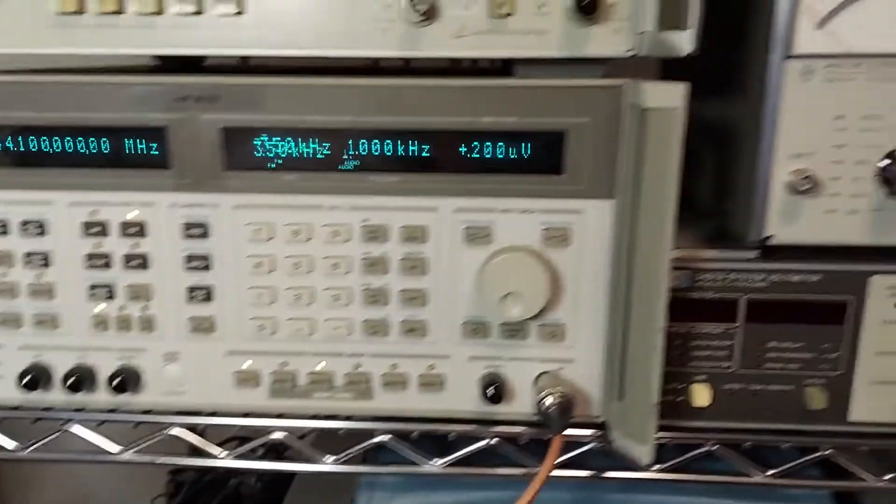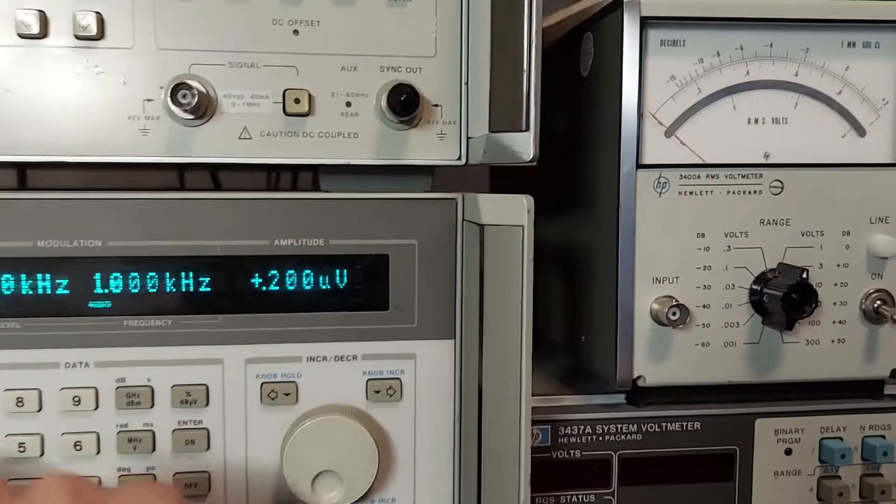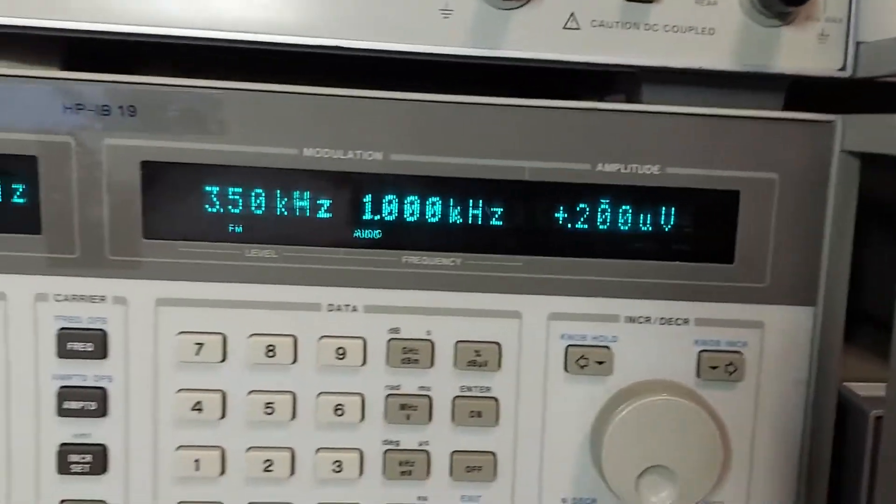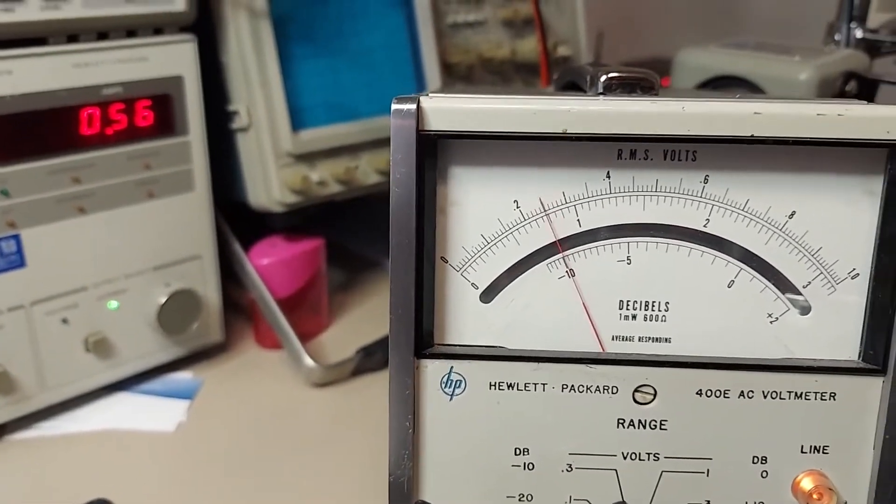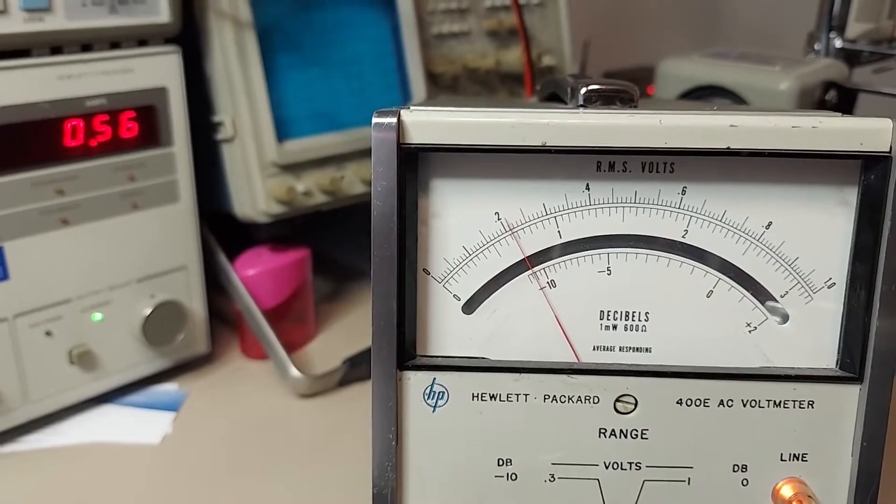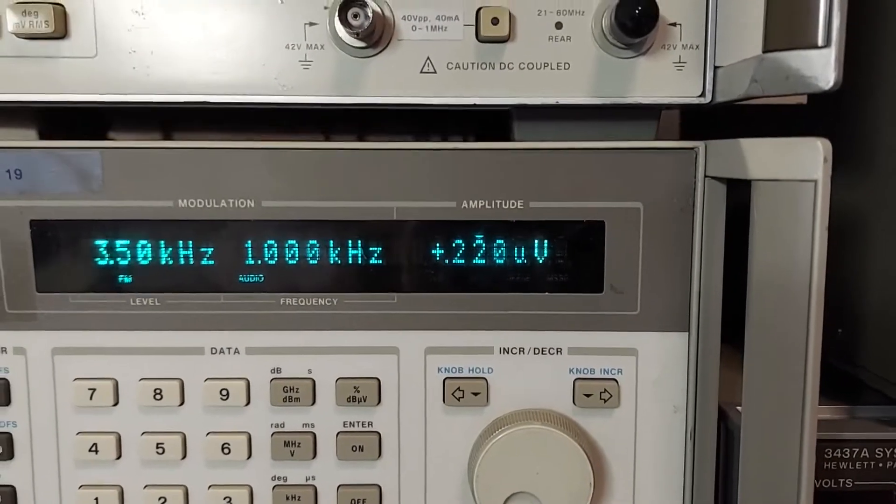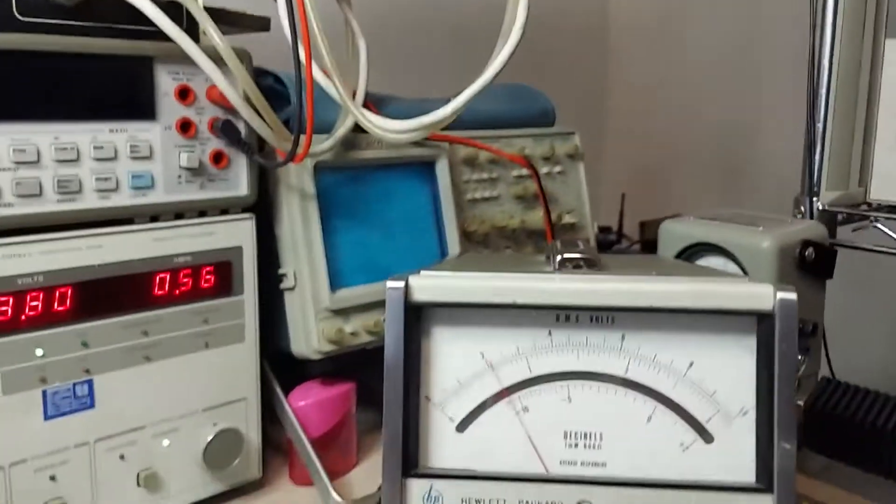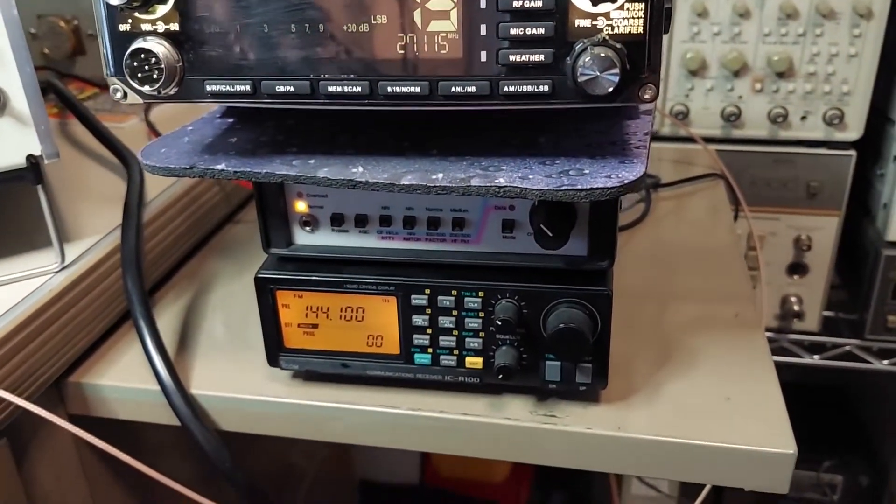We can probably increase the signal strength there a little bit and see what it gets us down to here. Looks like we need about 0.22 microvolts of signal strength to meet that 12 dB SINAD. Yeah, still not bad. That radio is pretty old - it was made in the 90s. After all those years, yeah, it still works.